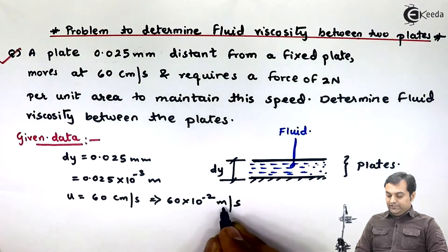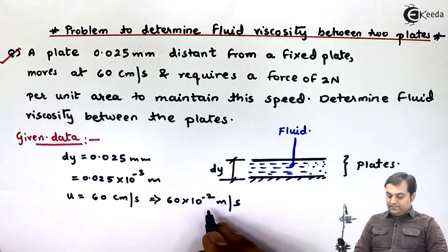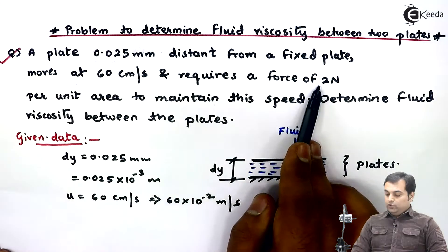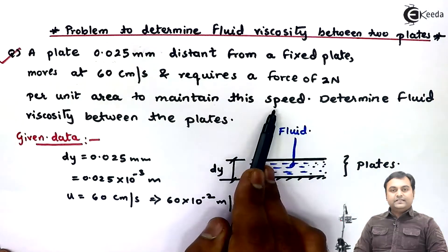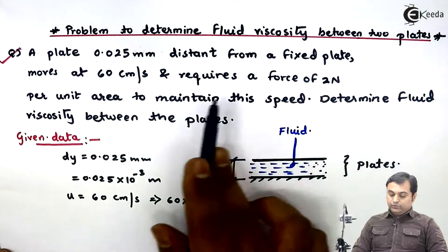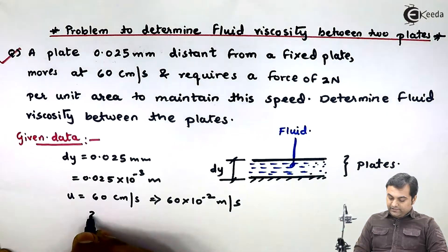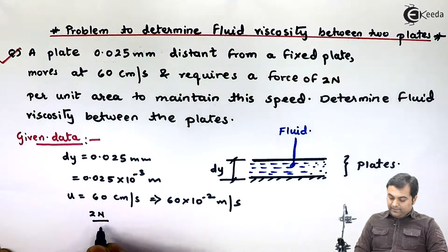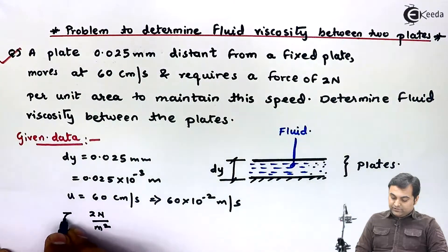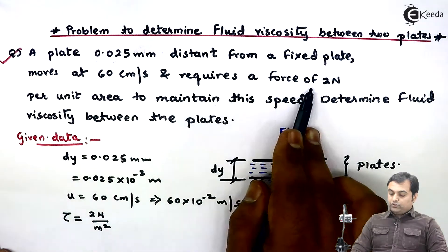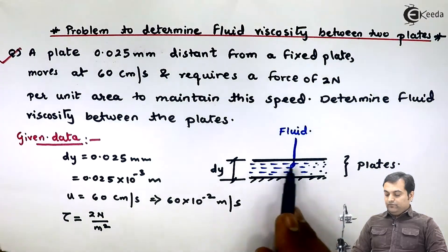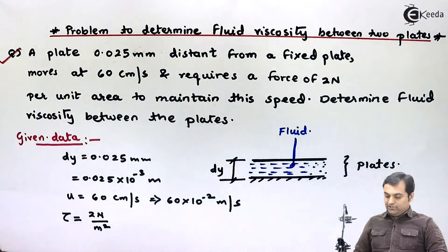I'm converting centimeters per second into meters per second, so one centimeter is replaced by 10 raise to minus 2 meters. Next, it requires a force of 2 Newton per unit area — that is 2 Newton per meter square. Force per unit area is stress, and here it is called shear stress because the flowing fluid has layers which are going to shear.